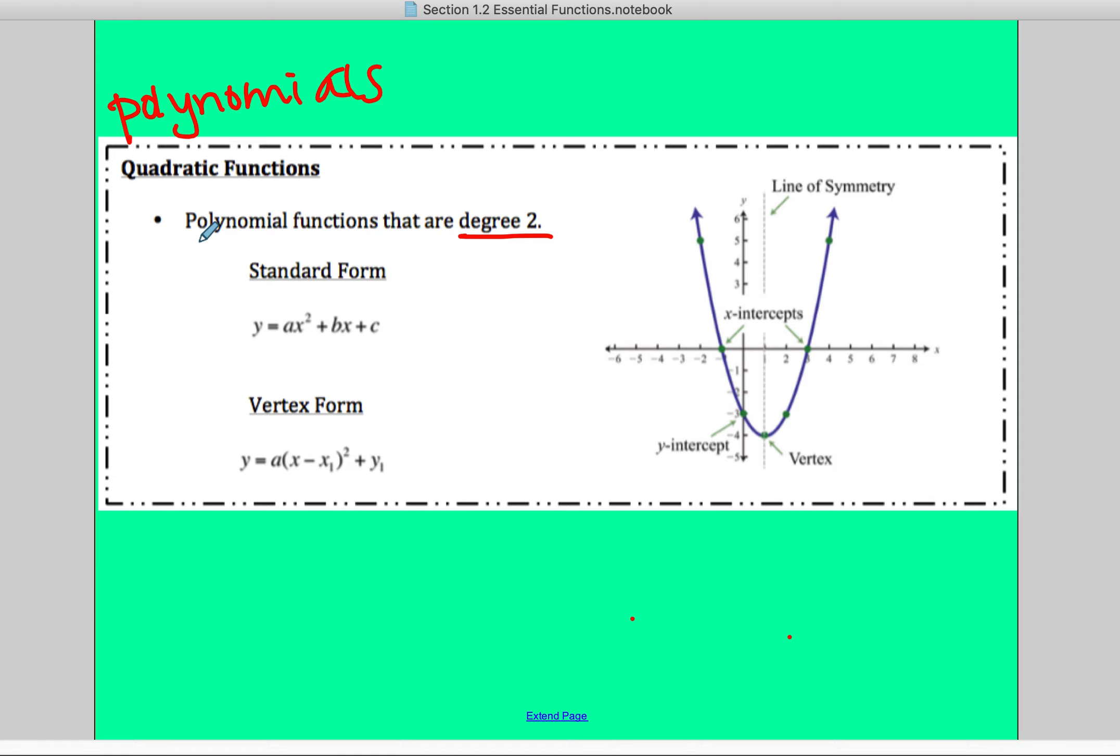Standard form for a quadratic is y equals ax squared plus bx plus c. In order to be in standard form, you always have your highest degree or exponent to your lowest in order.